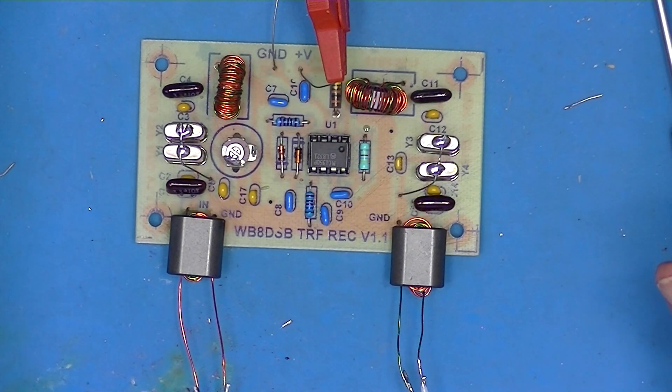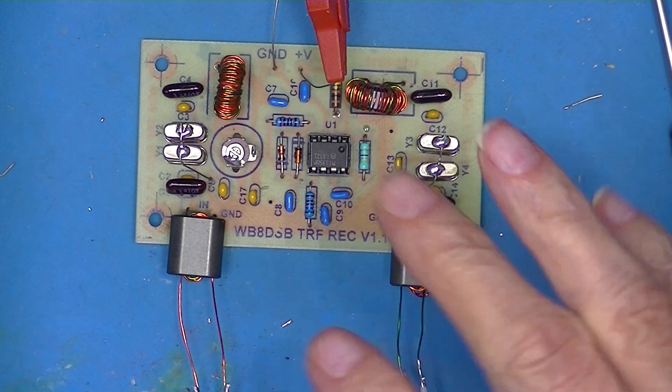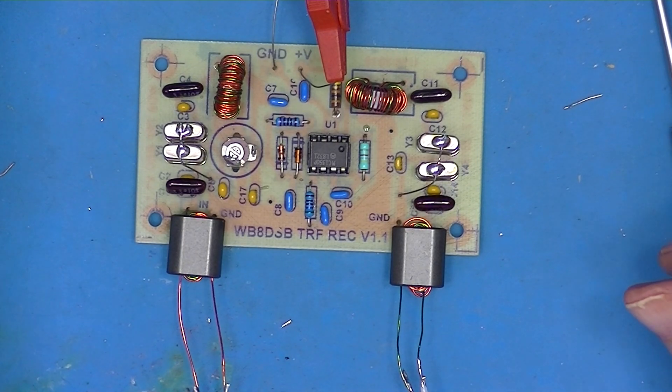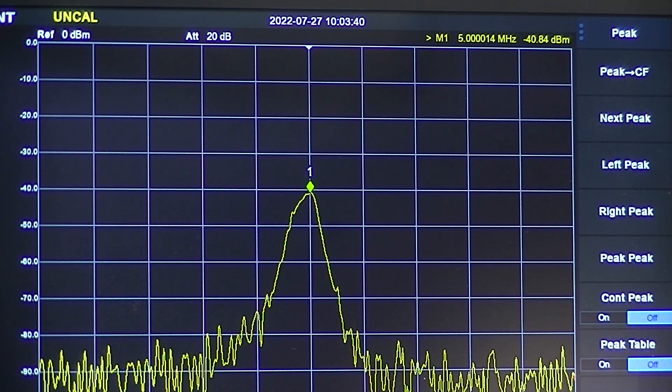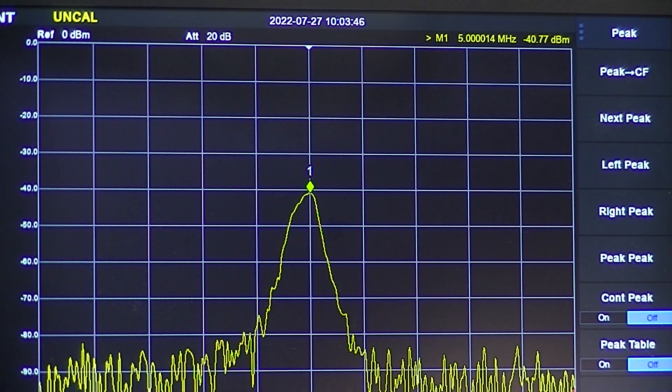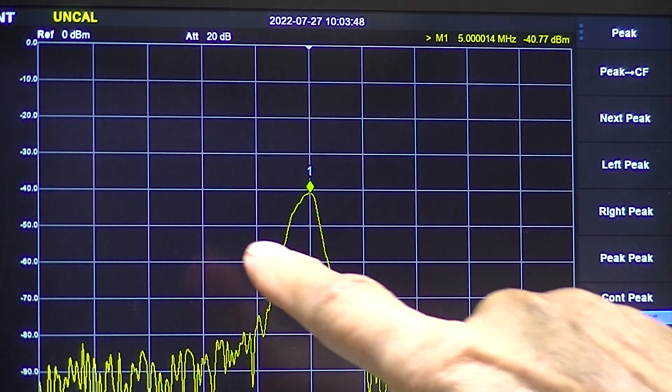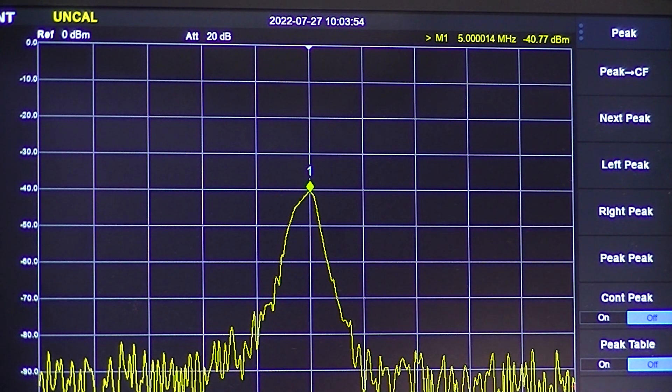It went together the same as the 10 megahertz version, no problems, nothing. I've got the same setup as before. It's a minus 80 dB input signal. You can see the output is minus 40, so that's 40 dB of gain.